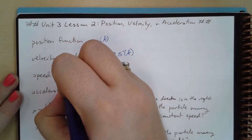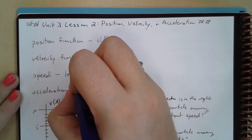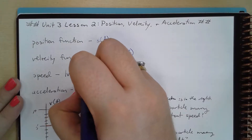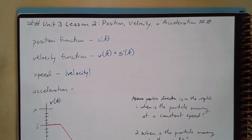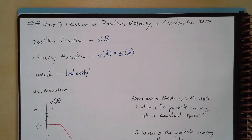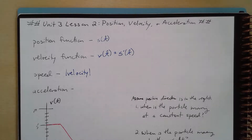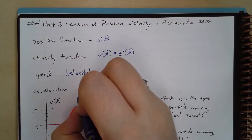Speed is just the absolute value of velocity. Speed does not indicate direction — you could be going forwards or backwards. Speed has to be either positive or zero no matter what direction you're going, and it's measured by the absolute value of velocity. Then we can talk about acceleration, which is the instantaneous rate of change of velocity.